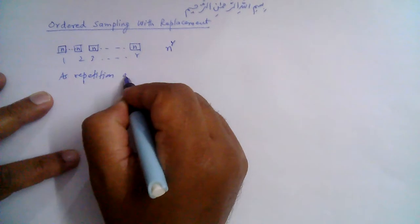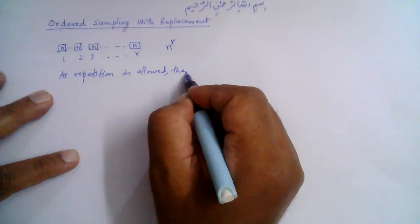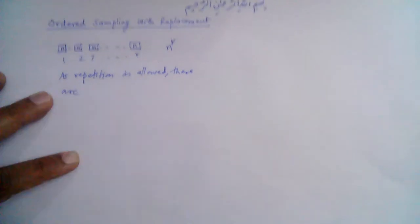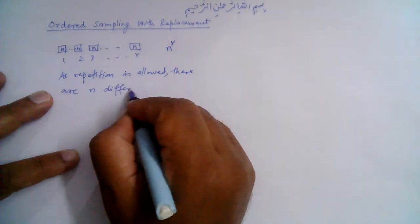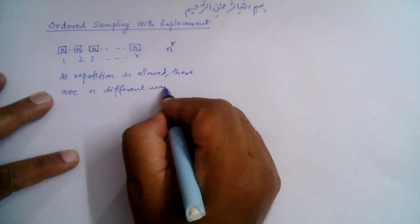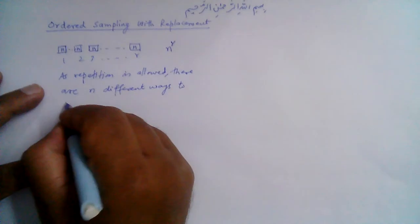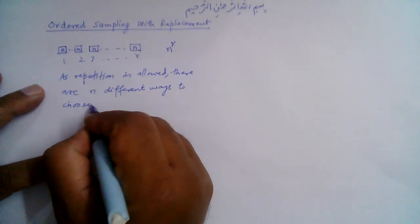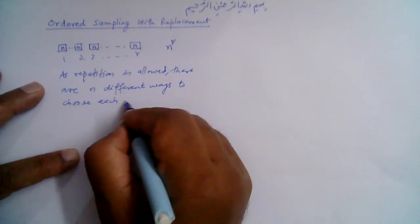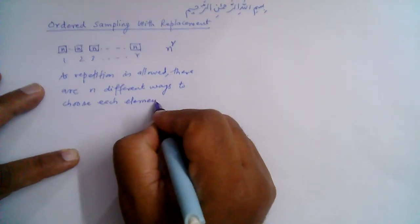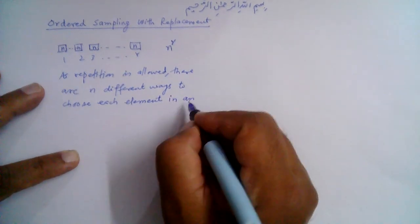We can say that as repetition is allowed, there are n different ways to choose each element in an ordered sample of r objects.